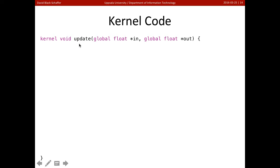So here's our kernel code. This is what's going to run on the GPU. It's called Update, and it has two inputs, or no, it has a float input and a float output, and let's see what it does.